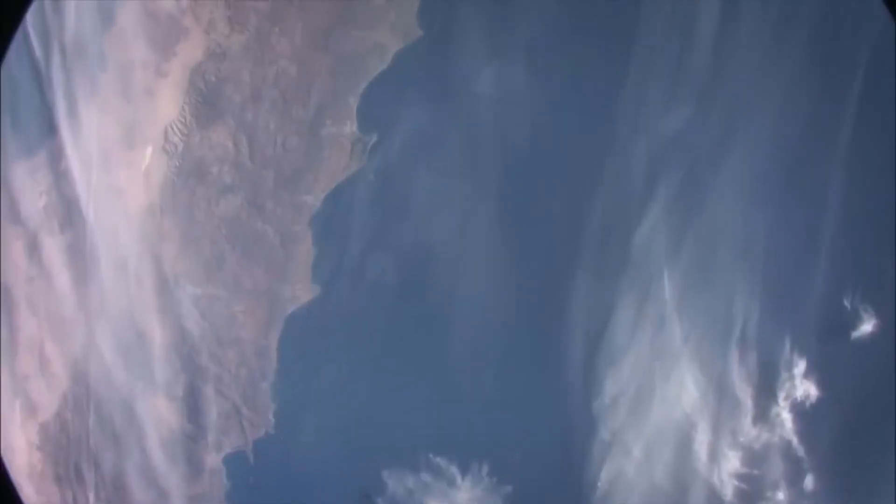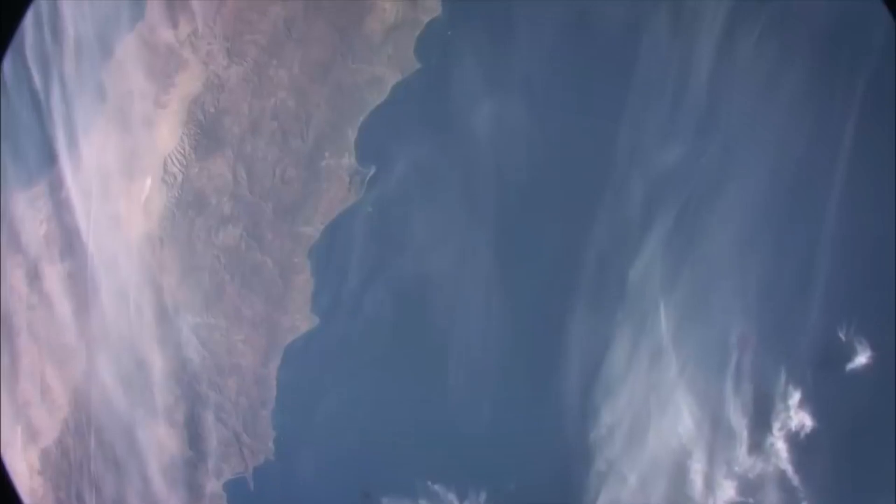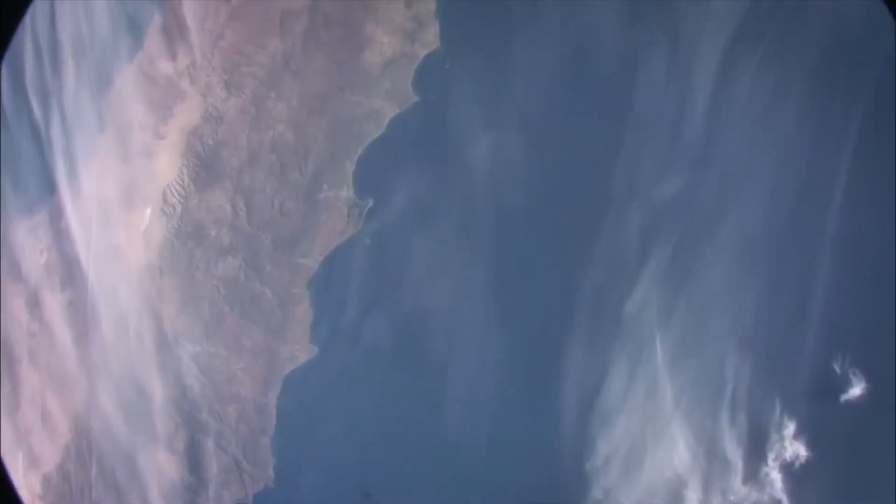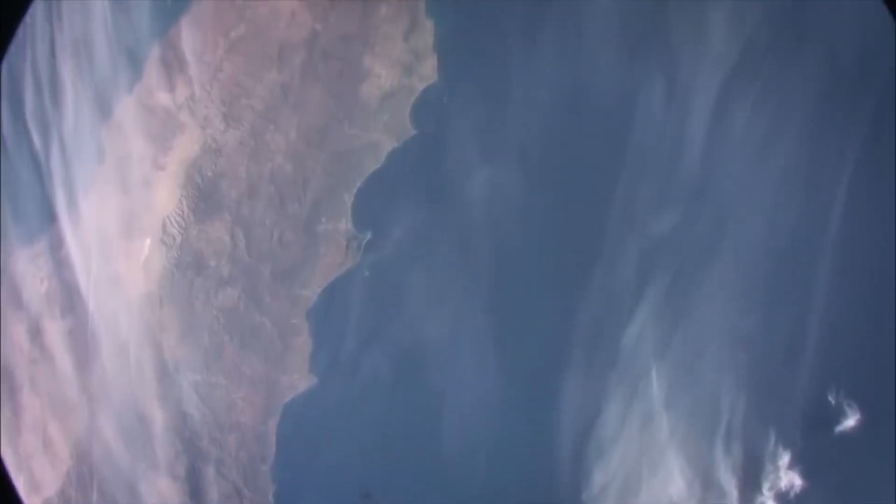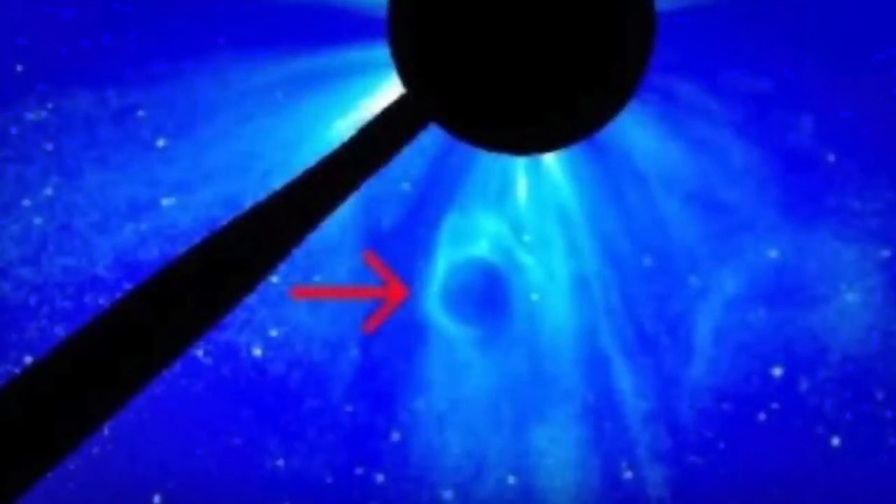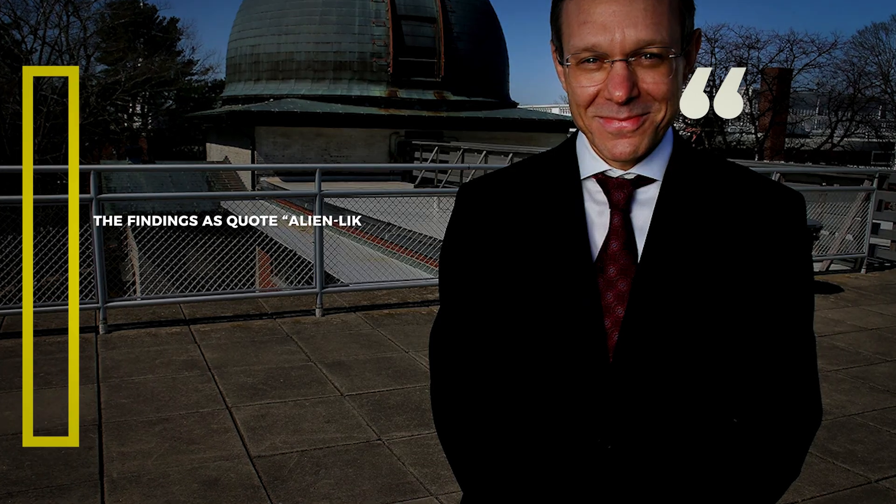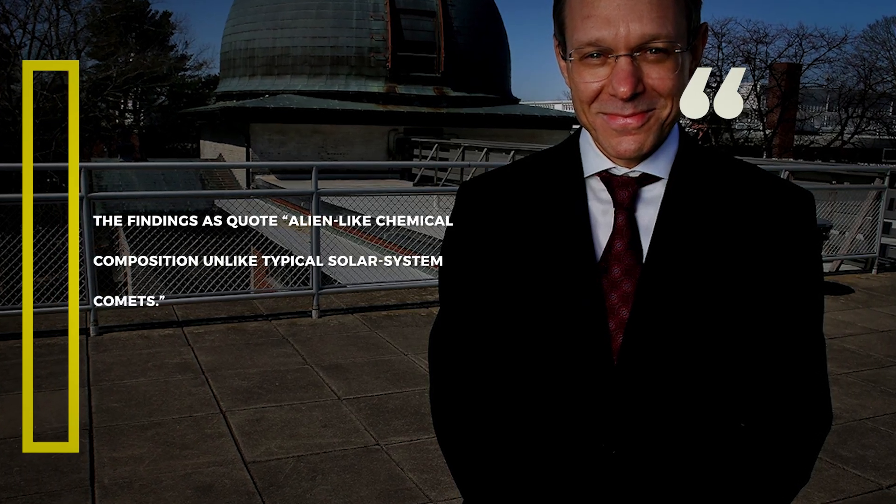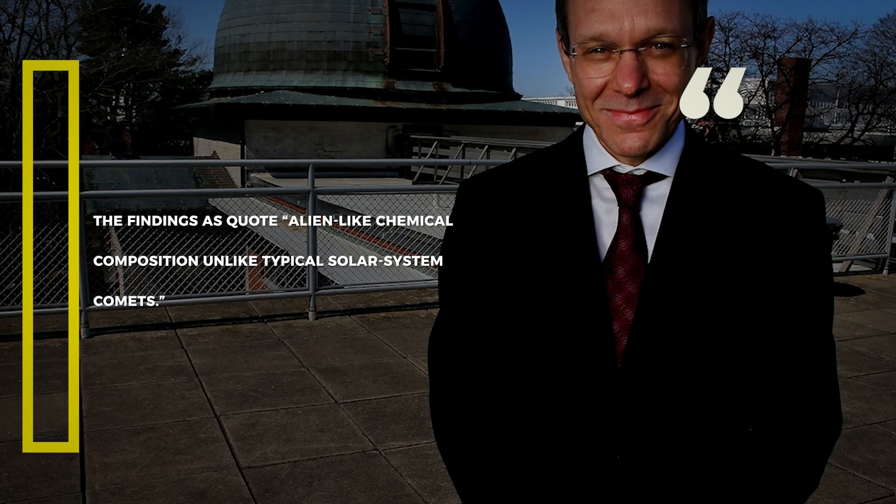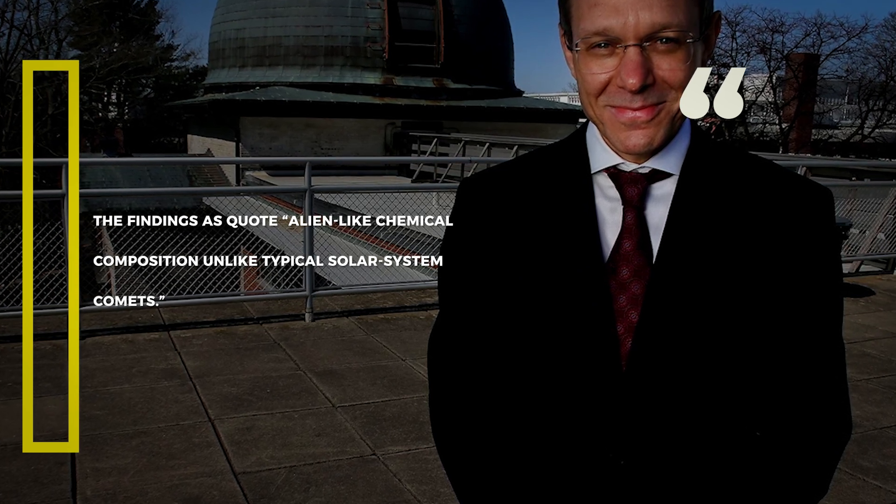The object, officially named 3I Atlas, measures seven miles across, traveling faster than any natural body formed in our solar system. But the real mystery lies in what it's made of. Harvard astrophysicist Avi Loeb described the findings as quote, alien-like chemical composition, unlike typical solar system comets.